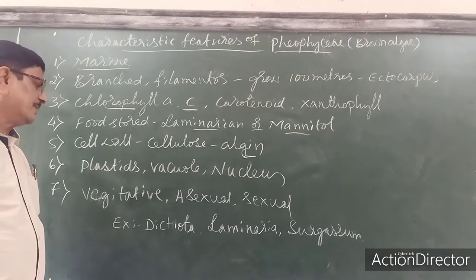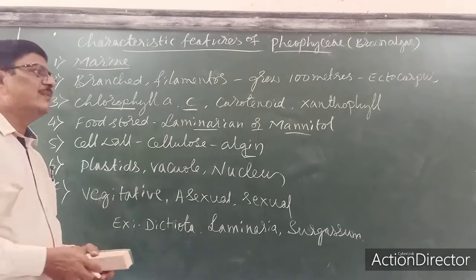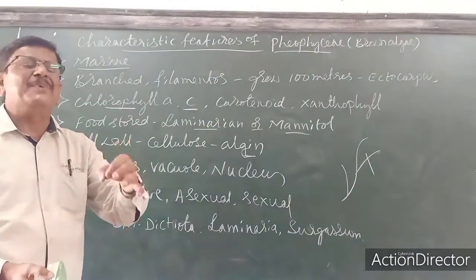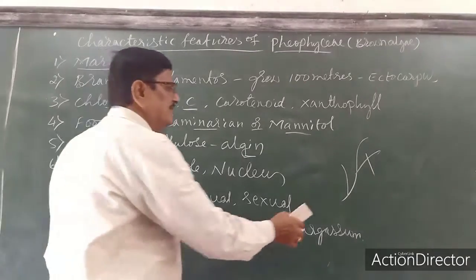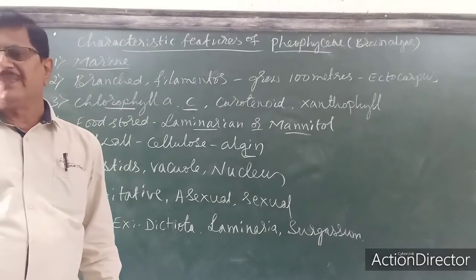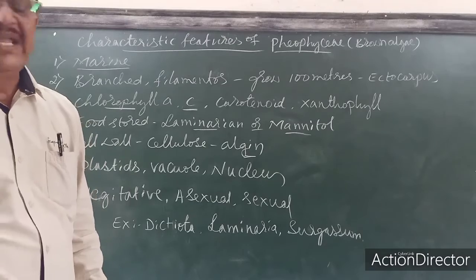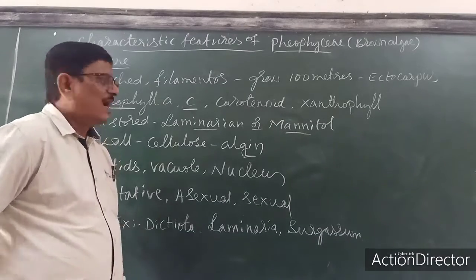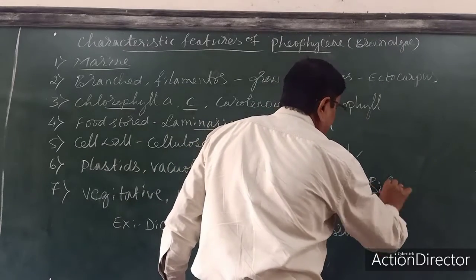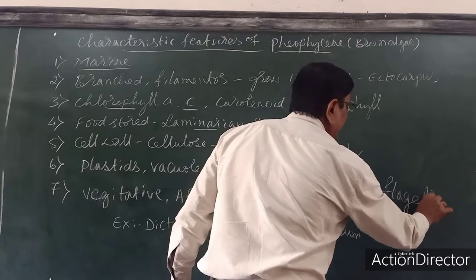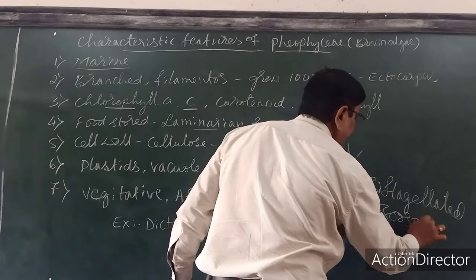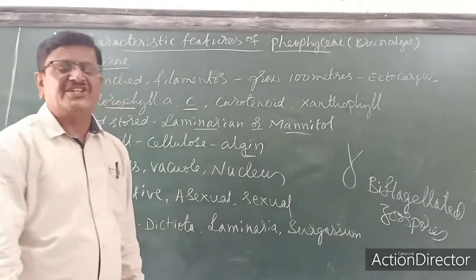Reproduction in Phaeophyceae: vegetative reproduction occurs by fragmentation, where each piece develops into an independent plant. The second method is asexual reproduction, which produces biflagellate zoospores — these are the asexual reproductive bodies.